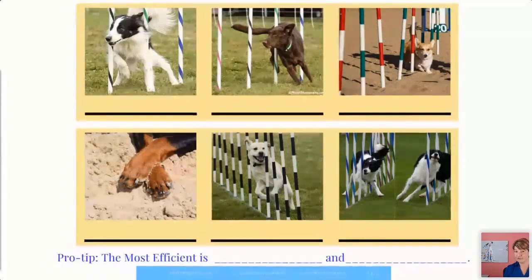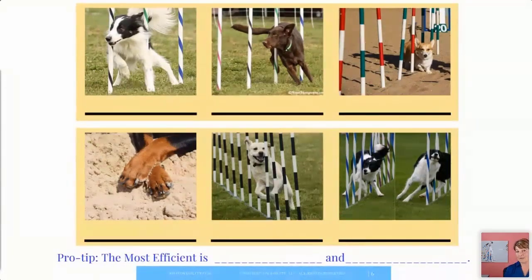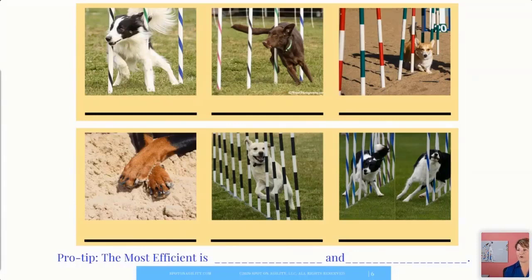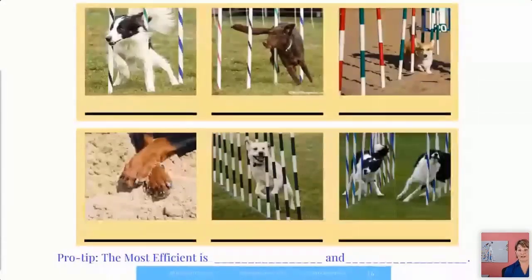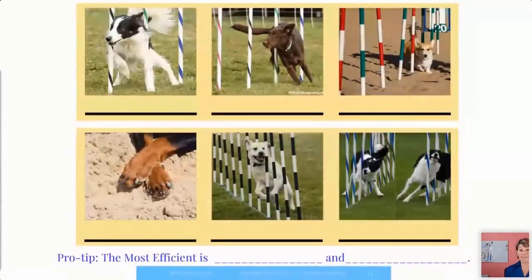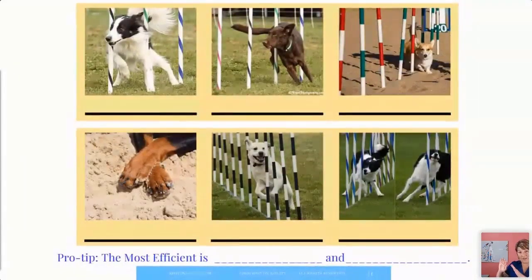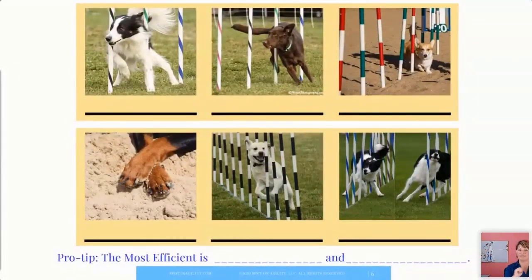Now, it doesn't necessarily make a difference what stride your dog has or what type of stride your dog has. They're all going to work. But if you're going to go for efficiency, sometimes that's the area that you want to try to go for is that single stride. Now, the next stride is what I call a double stride. So what's happening in the top middle picture, the dog is actually pushing off with both feet. And that's called a double stride.